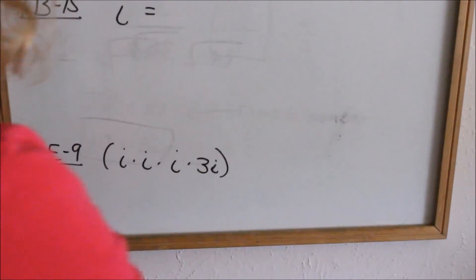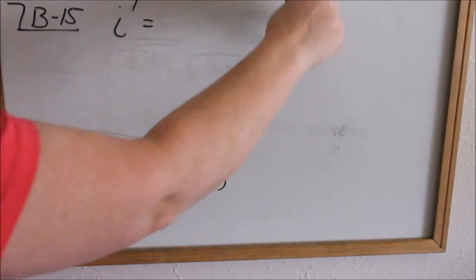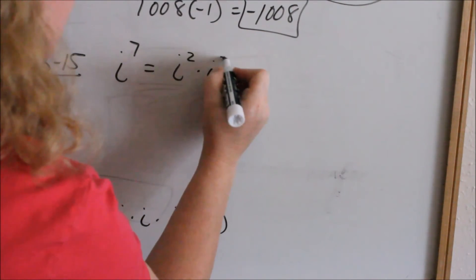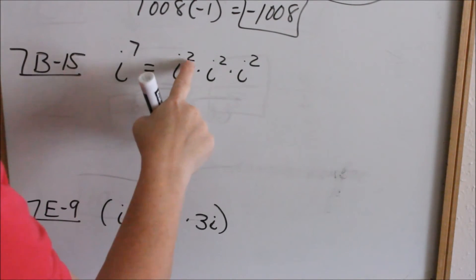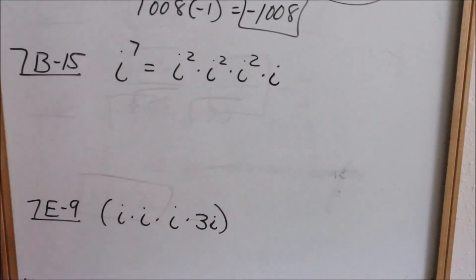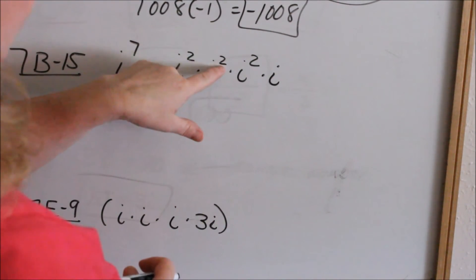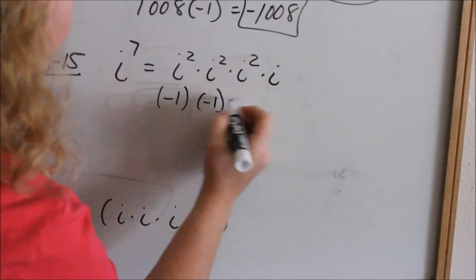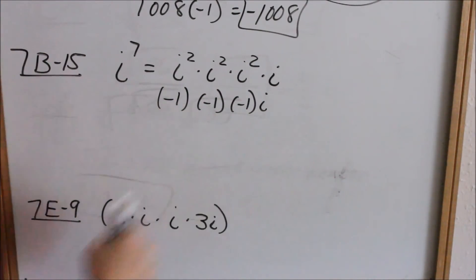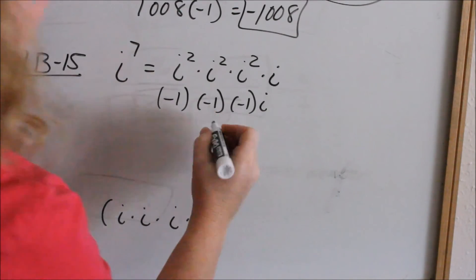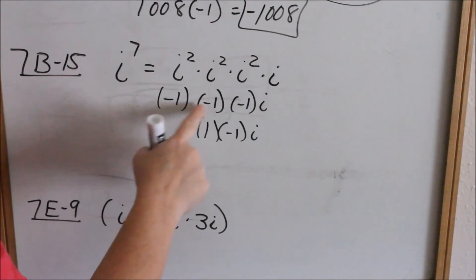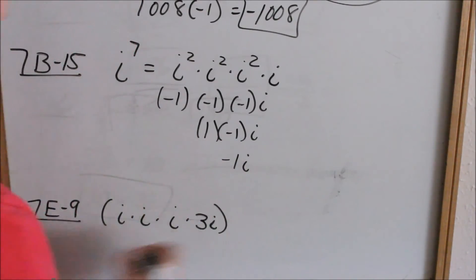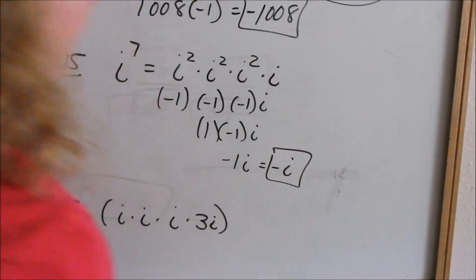Look at problem 7b15: i to the 7th. Since i squared equals negative 1, break this up into i squared times i squared times i squared times i. Adding exponents: 2 plus 2 plus 2 plus 1 equals 7, so that's the same as i to the 7th. Replace each i squared with negative 1: negative 1 times negative 1 times negative 1 times i. Negative 1 times negative 1 is positive 1; positive 1 times negative 1 is negative 1; so the answer is negative i.